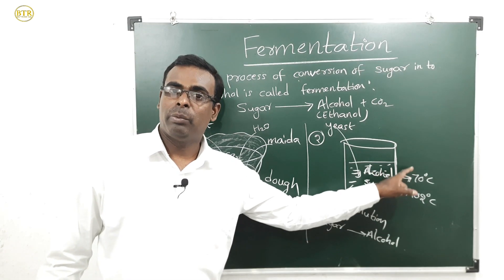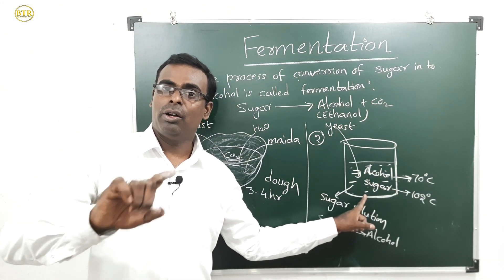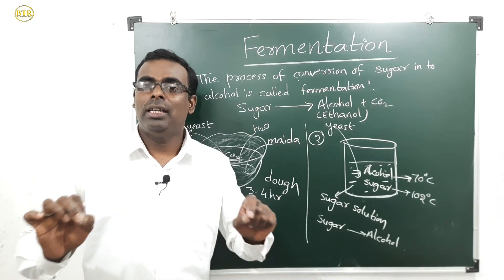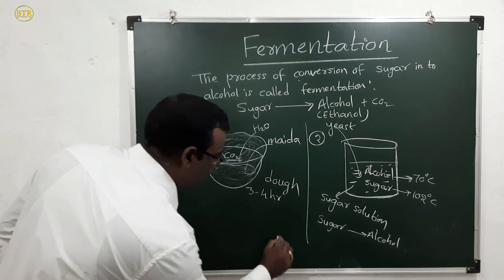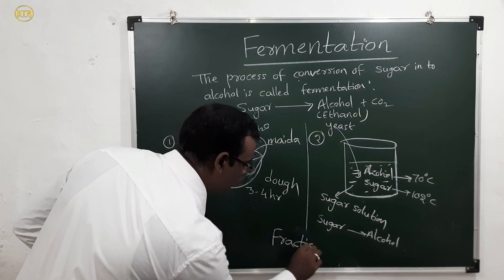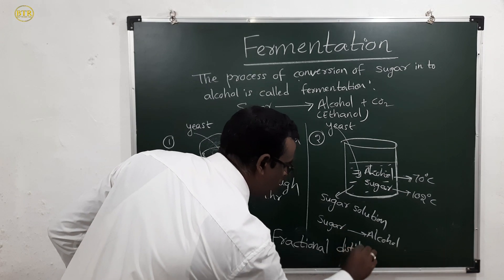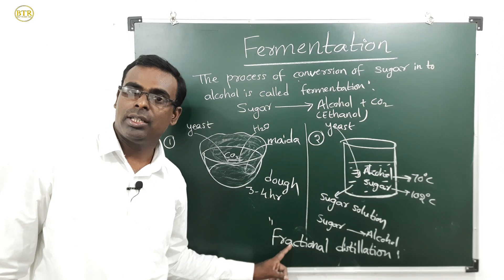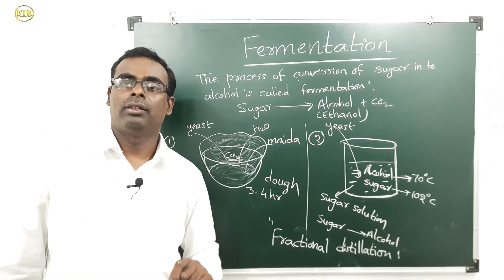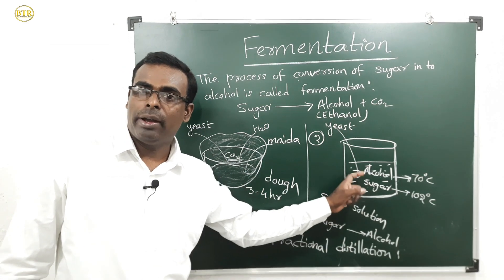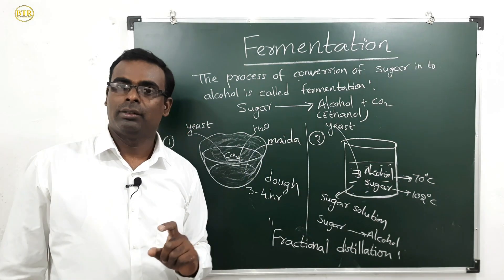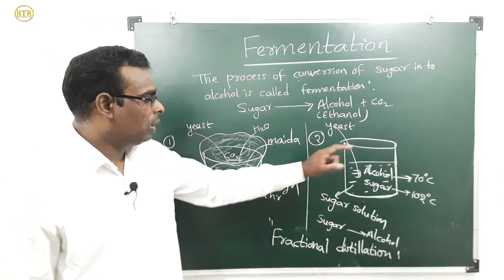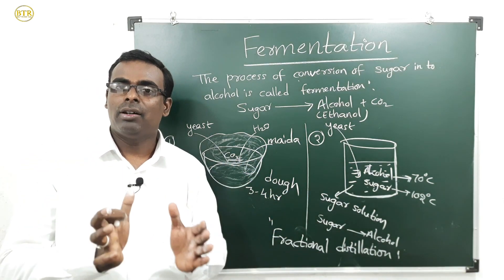There is a large difference in the boiling points of these two solutions. When there is a large difference in boiling points, we can separate them very easily by a method called fractional distillation. Fractional distillation is a method in which a liquid mixture is separated based on the boiling points of its components.